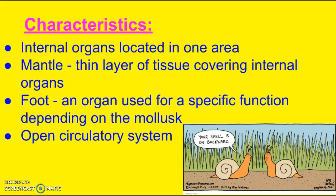Some other characteristics are that they have internal organs that are located in one area. They also have a mantle, which is a thin layer of tissue that covers those internal organs. They also have a foot — in mollusks, a foot is an organ that's used for a specific function, and that function depends on what type of mollusk it is. So a foot could be used for crawling, or digging, or catching prey.